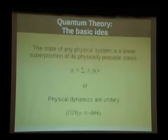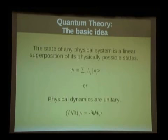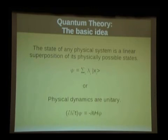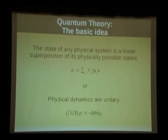A basic idea comes out of this, stated two ways. One way: the state of any physical system is a linear superposition of all its possible states. You can write the wave function ψ as a sum over all possible states |x⟩ with complex coefficients — it's the complexity of those numbers that generates the interference pattern. Equivalently, you can write down Schrödinger's equation and say physical dynamics are always unitary. Unitary dynamics is such that if you start a quantum state in any particular state, turn the crank of unitary dynamics, and it spreads out all over the universe. Unitary dynamics creates and preserves superpositions.